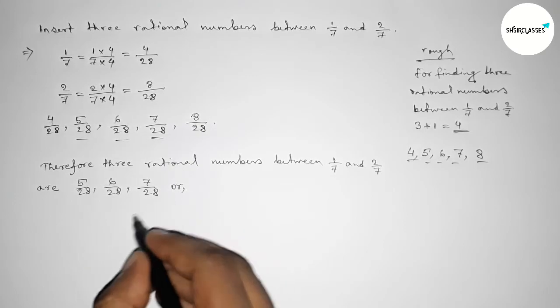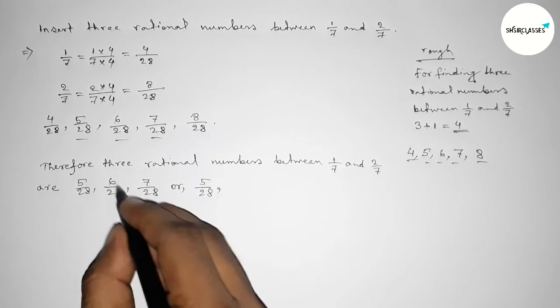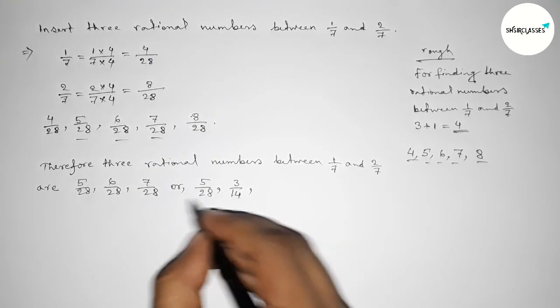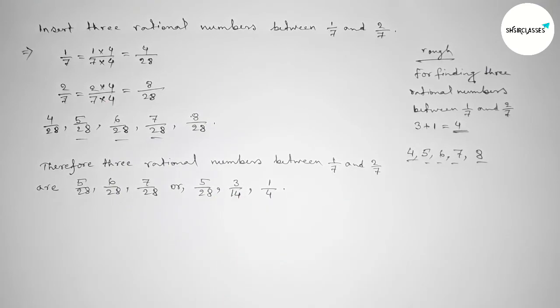Or we can write 5 over 28, and if you divide both numbers by 2, then this is 3 over 14, and dividing both numbers by 7, so this is 1 over 4. So that's all the rule.